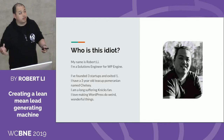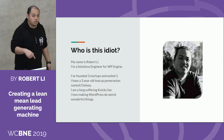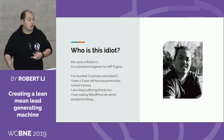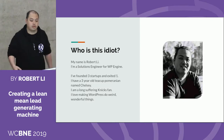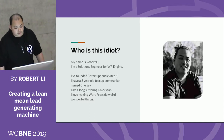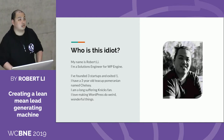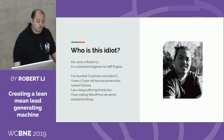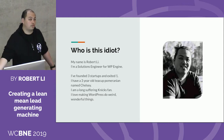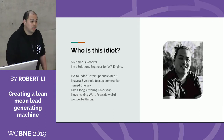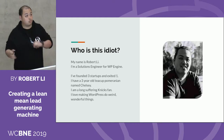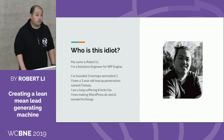My name is Robert. I'm one of the solutions engineers at WP Engine. In terms of my background, I've started three startups and exited one. I love my little dog — her name is Chelsea. I like basketball and go for a team that never wins. I love making WordPress do crazy stuff and break.